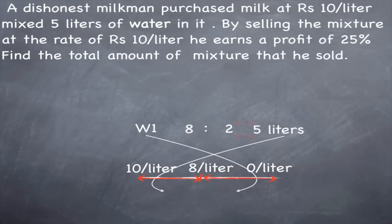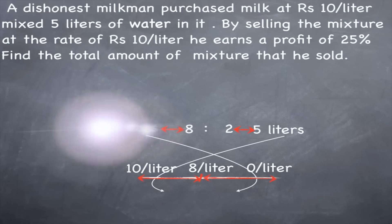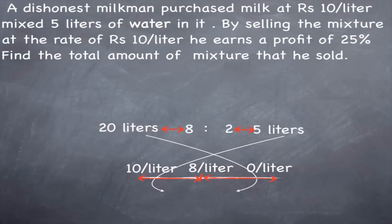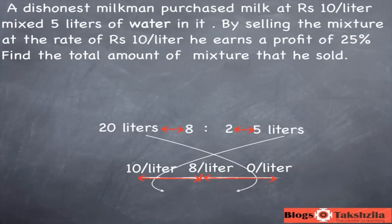We have Rs.10 per liter on one side, 0 on the other side, and the resultant is 8. The differences are 2 and 8, giving a ratio of 1 is to 4. Flipping that back gives 4 is to 1. Weight 2 was actually 5 liters, so 1x equals 5, meaning 4x equals 20. The total amount of mixture is 20 plus 5, which is 25 liters.